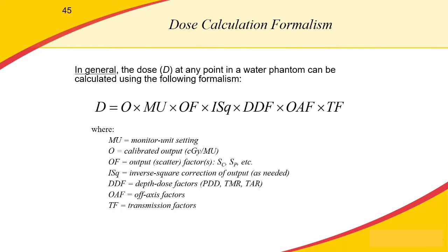If you remember our dose calculation formulation from the end of part two, our general dose calculation formula looks something like this: it's our dose times our calibrated output in centigrade per monitor unit under calibration conditions, times the number of monitor units delivered during the treatment, and then all of the output factors we need to convert from the calibration condition to the specific treatment condition.